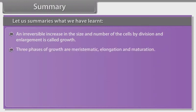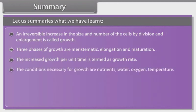Three phases of growth are meristematic, elongation and maturation. The increased growth per unit time is termed as growth rate. The conditions necessary for growth are nutrients, water, oxygen, temperature.